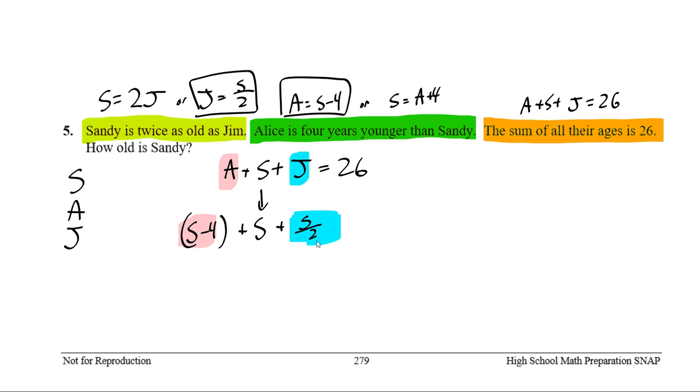I'm just going to write S over 2, because I like it. So if we add all of these up, they should still equal 26. When I'm looking at these, I'm going to want to collect my like terms over on the left. So all of the Sandys I'm going to put over here, and all of the numbers I'm going to put over, let's pick a color, here.